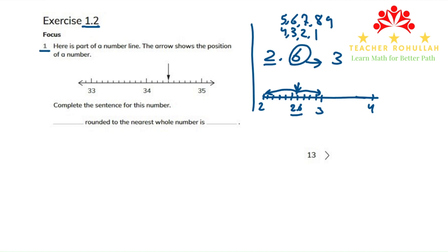In example 1, it says: Here is part of a number line. The arrow shows the position of a number. So the numbers on the number line are 33, 34, and 35. The same as this number line, the distance between 34 and 35 is divided into 10 equal parts. The arrow is pointing to one of those equal parts.